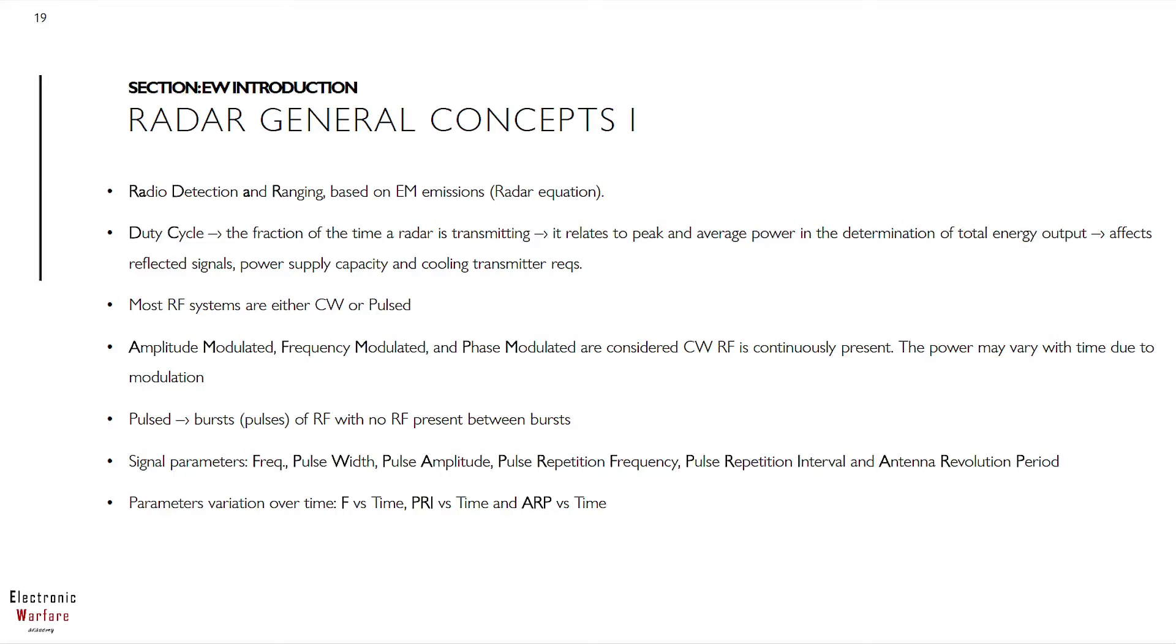Third, RF systems typically implement either continuous wave or pulse signals. For continuous wave systems, the RF is continuously present. This includes amplitude, frequency, and phase modulated signals. For pulse systems, bursts are emitted as a train of pulses. Therefore the RF is present between bursts.